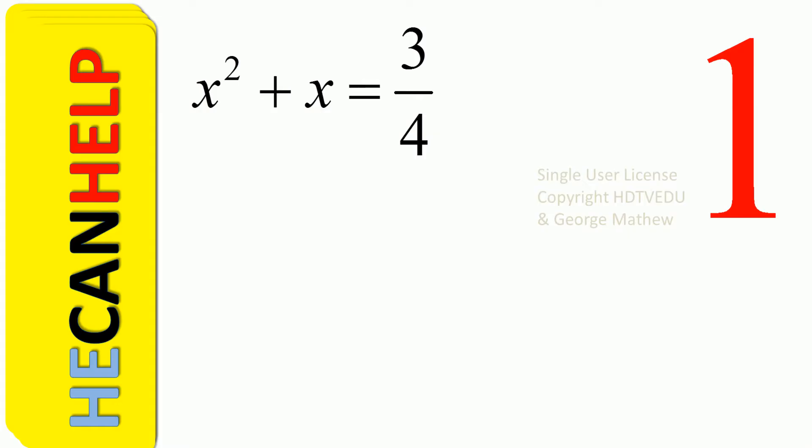So x squared plus x equals 3 over 4. What is the coefficient of x squared? When nothing is written next to x squared, it is 1. When the coefficient of x squared is equal to 1,